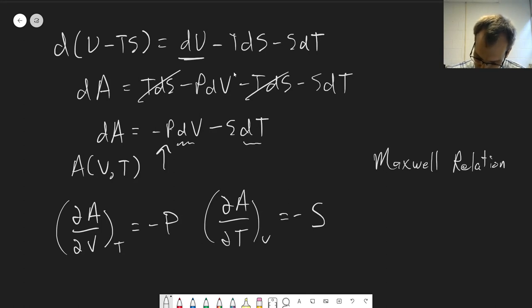These are both negative, so they'll end up being positive overall. We're going to get dp dt at constant v. Oh, now that one looks much more useful because these are all things we can measure. Pressure, temperature, volume is equal to ds dv at constant t.